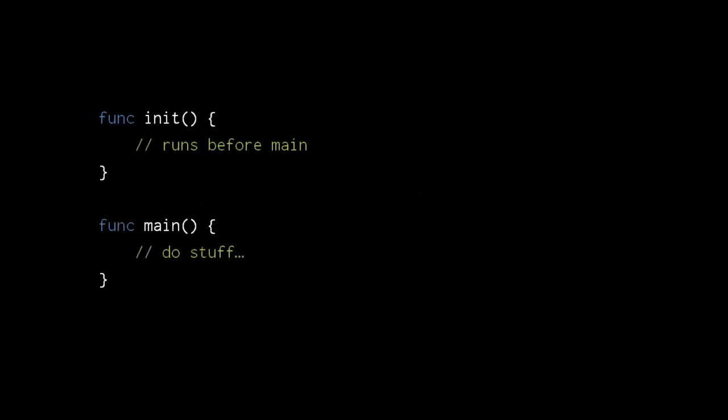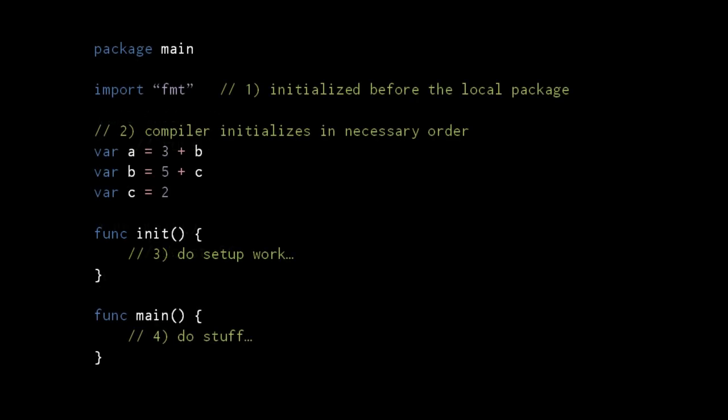Each package can have a special function init for doing any setup work which the package needs to do. If the package has a main function, the init function will always run first. When a package is imported by another, the compiler guarantees that the imported package is completely initialized before the local package. Global variables can be initialized by arbitrary expressions, even expressions that use other global variables of the package. For example, the initial value of A depends upon the initial value of B, and the initial value of B depends upon the initial value of C, even though A is declared before B and B is declared before C. The compiler will figure out the appropriate execution order, and the variable initializations always run before the optional init function.